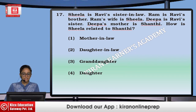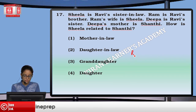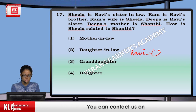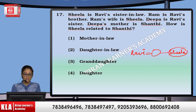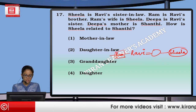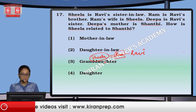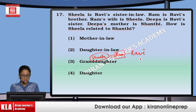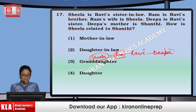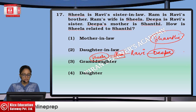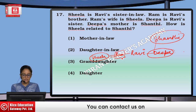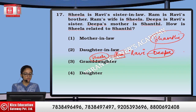Next: Sheila is Ravi's sister-in-law. Ravi is married to a girl whose sister is Sheila. Then Ram is Ravi's brother, and Ram's wife is Sheila — so Sheila is a brother's wife. Deepa is Ravi's sister, and Deepa's mother is Sainthi. How is Sheila related to Sainthi? Ram will be son, and son's wife will be daughter-in-law. That means option number second.